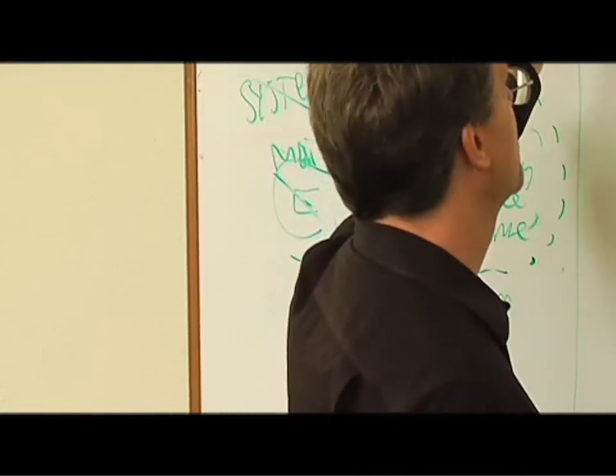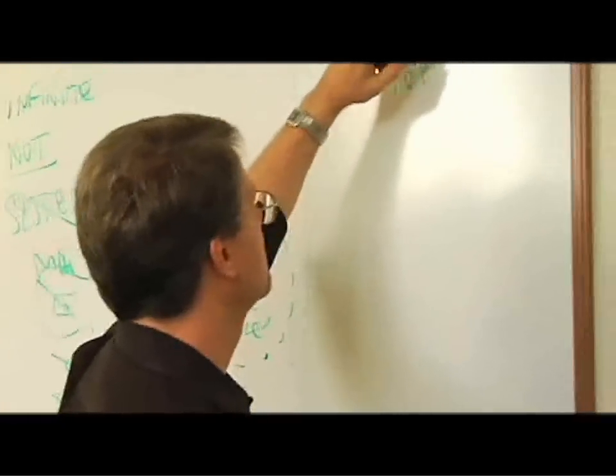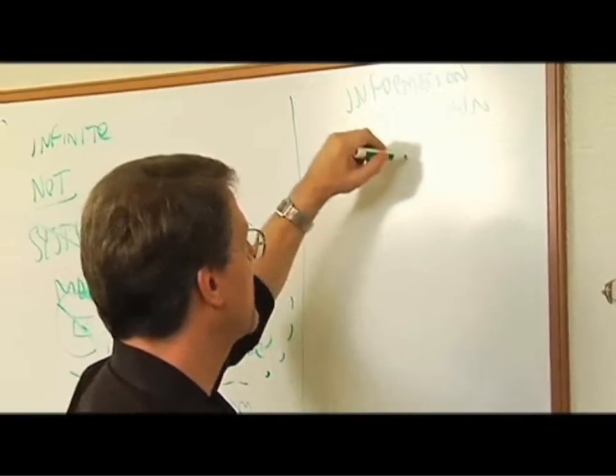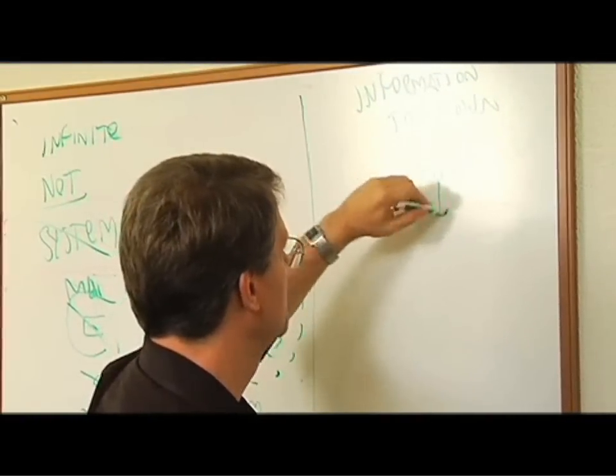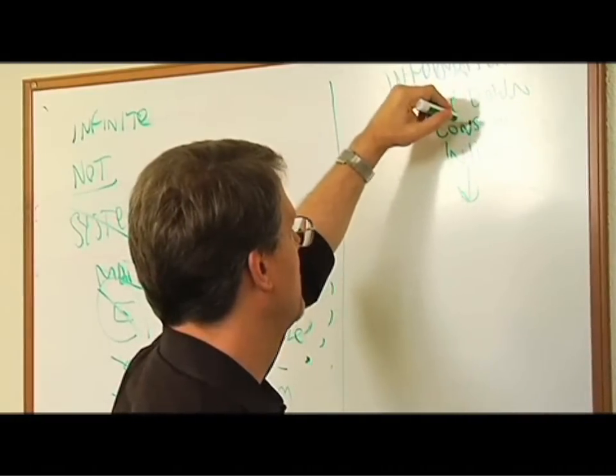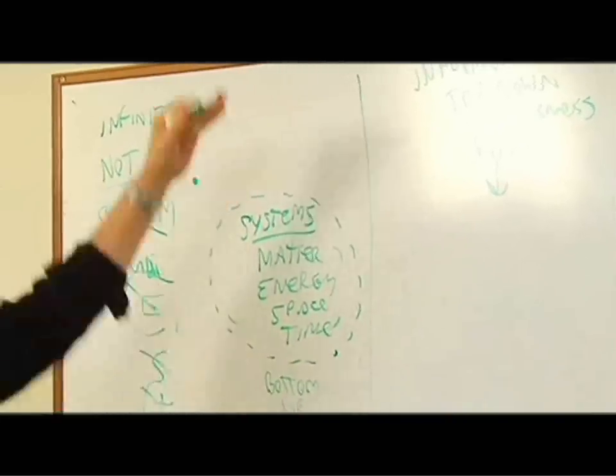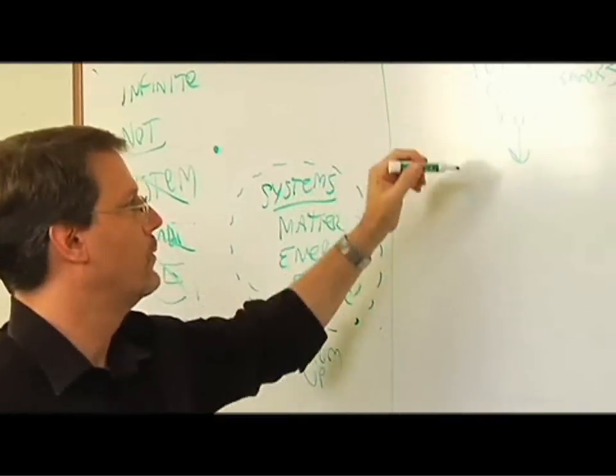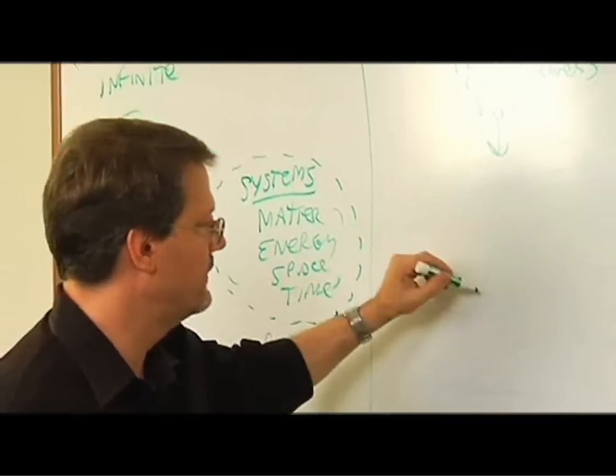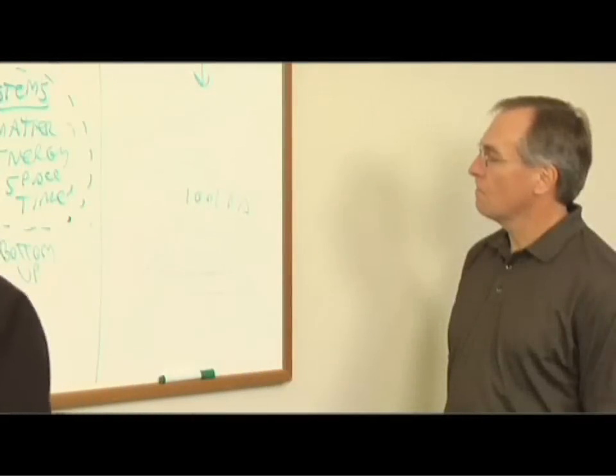But information is top down. It starts from will and consciousness. Consciousness, right? Consciousness and will end up being, you know, ones and zeros. Right? Yep.